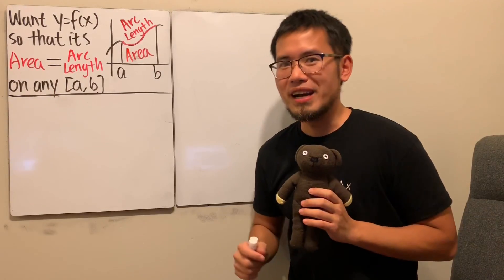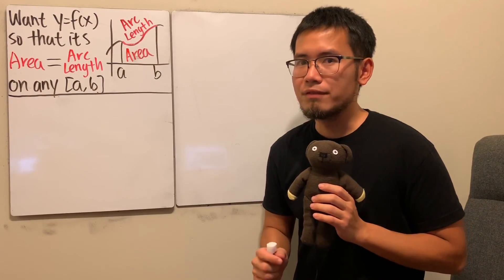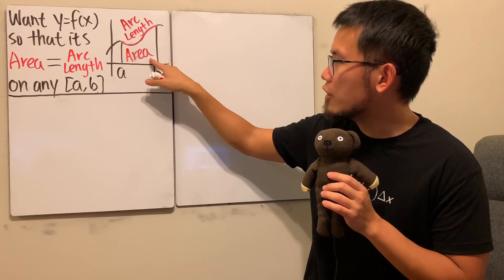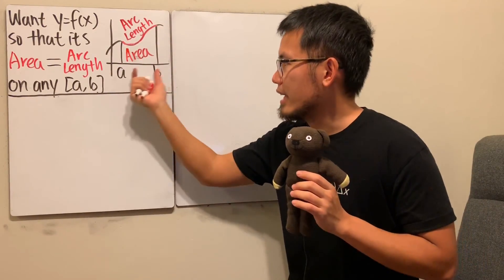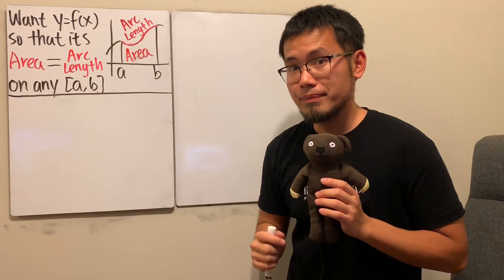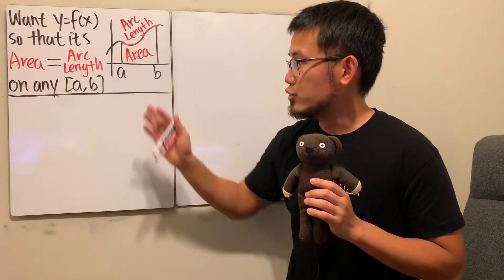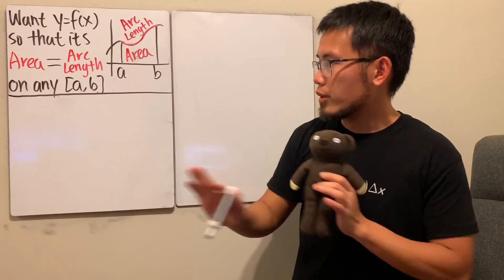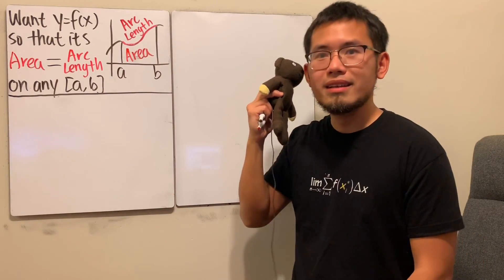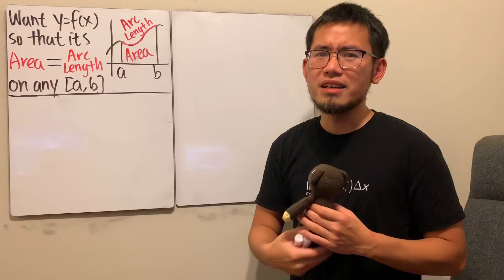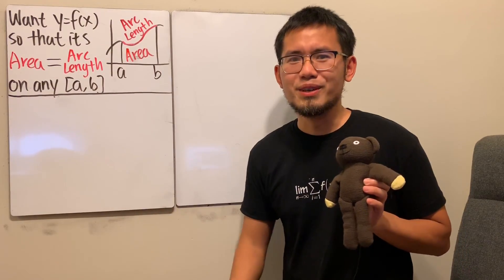Hello! I have a question for you guys. Is it possible to have some function so that its area under the curve is the same as its arc length on any interval a, b? What do you guys think? And of course we're talking about just the numerical value, we are not talking about the units whatsoever. Teddy, what do you think? Yes. And of course it's a yes because otherwise how can we make this video, right?